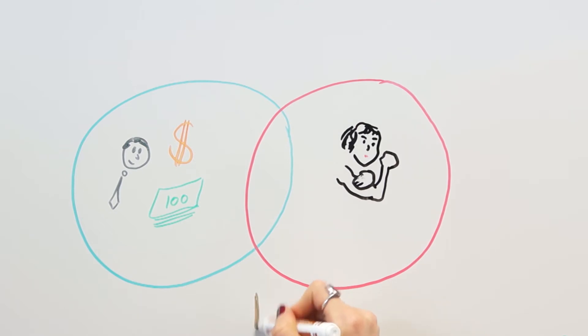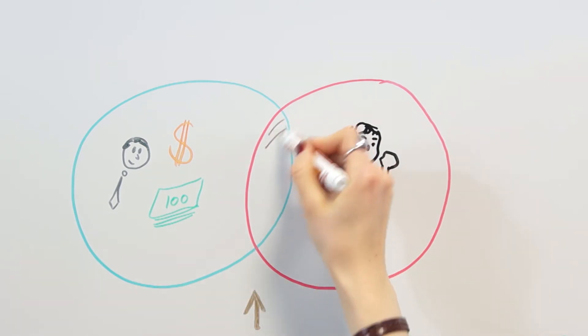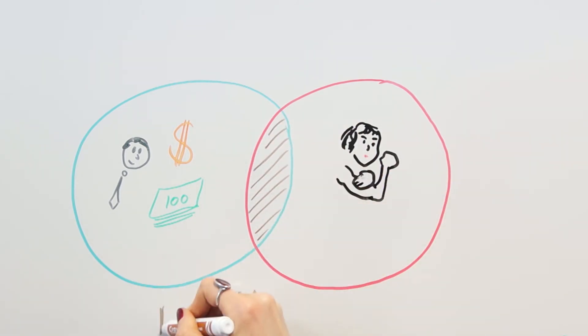Now visually it is very clear that this area in the middle is smaller than this whole blue area. What that means is that the number of feminist bank tellers will always be smaller than the number of bank tellers in general.